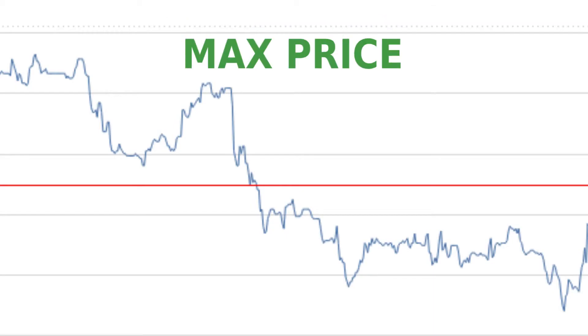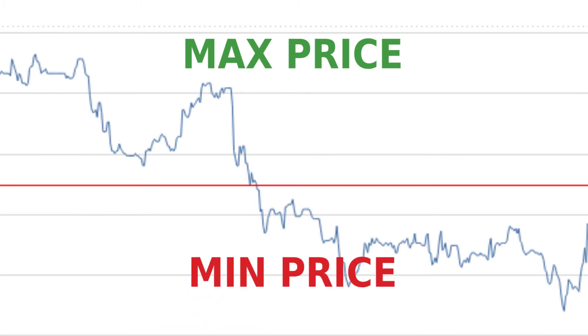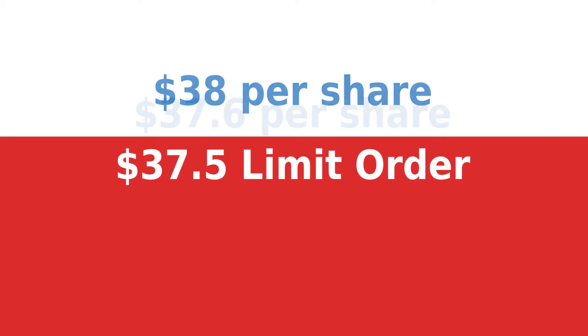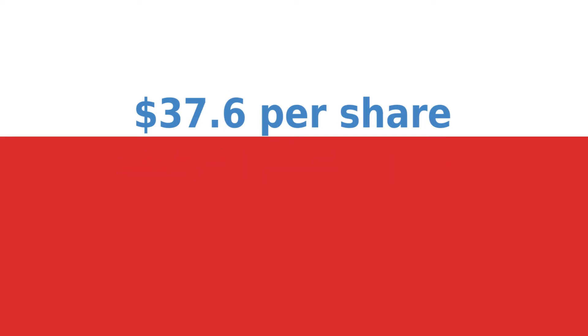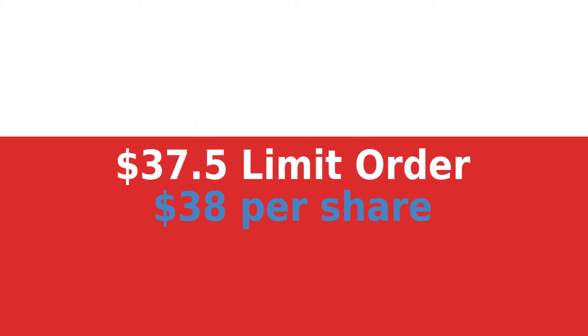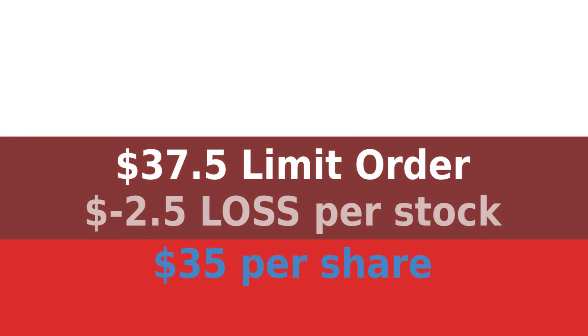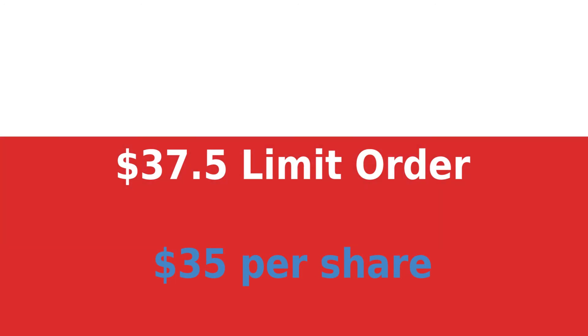A limit order allows you to limit either the maximum price you pay or the minimum price. There are a few things to take into account. First, the stock price may never fall or rise to the limit you've established; as a result, your order may never be executed. Second, if there is a sudden drop in the stock price your order will execute at your limit price, but all you gain is losses because of the sudden drop.